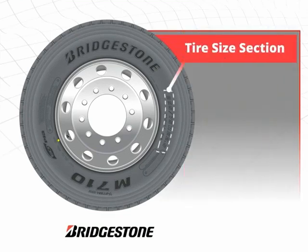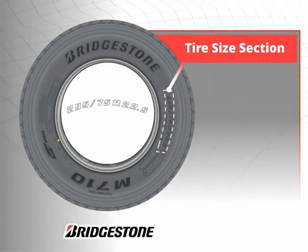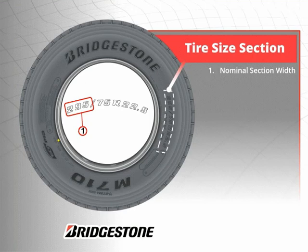What do those numbers mean in the tire size section of the tire? The first is nominal section width. On low profile tires, section width will usually be in millimeters, as in this case, 295. On tall profile tires, nominal section width will be in inches, as in the 11 in 11R22.5.